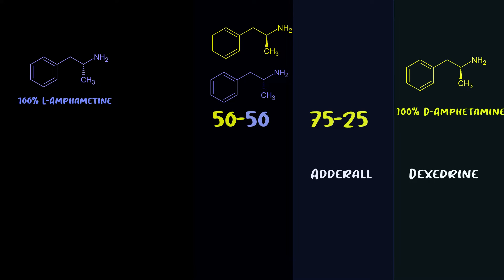Dexedrine is 100% d-amphetamine — its generic name is literally dextroamphetamine. There are people who have side effects on Adderall but not on Dexedrine, presumably because the l-amphetamine was causing those side effects. Most people actually tend to prefer Dexedrine to Adderall; some describe it as more euphoric, which makes sense since Adderall still has that 25% l-amphetamine making it more physically stimulating. Because of that, people do fear Dexedrine is more habit-forming.